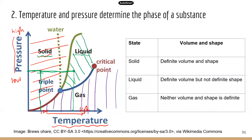Let's say we use the same temperature but decrease the pressure to maybe a quarter of the previous value. Where the temperature line and the new pressure line intercept, the substance will be in the gas state. With less pressure, there's less force to pack the molecules tightly, so the molecules are not very tightly packed and can spread out a lot. In the gas state, molecules spread out the most — they're the least tightly packed and the least orderly.